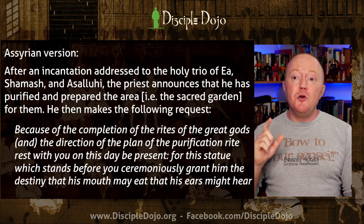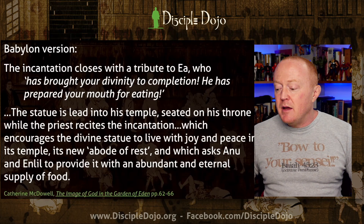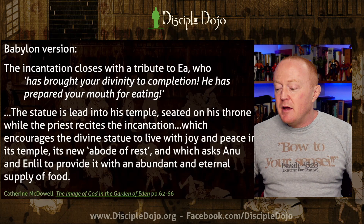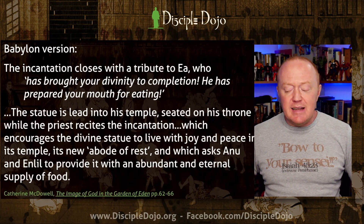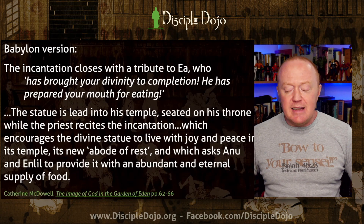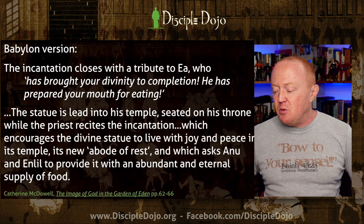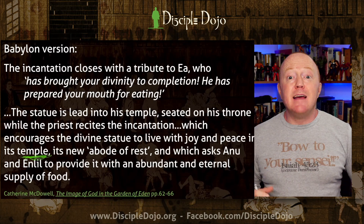In the Babylonian version, the incantation closes with a tribute to Ea, who 'has brought your divinity to completion, he has prepared your mouth for eating.' Then the statue is led into his temple, seated on his throne, while the priest recites an incantation encouraging the divine statue to 'live with joy and peace in its temple, its new abode of rest,' asking Anu and Enlil to provide an abundant and eternal supply of food.